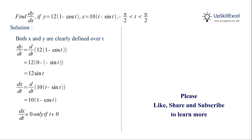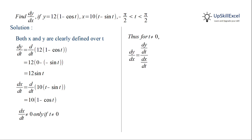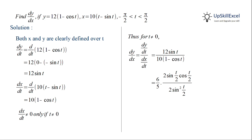So we can find dy by dx at all t except t equal to 0. Substituting the values of dy by dt and dx by dt, and then applying the sin 2-theta and cos 2-theta formulas to replace sin t by 2 sin(t/2) cos(t/2), and in the denominator 1 minus cos t can be replaced by 2 sin squared(t/2). We can then cancel one sin(t/2) from the numerator with sin(t/2) in the denominator to get 6 by 5 cos(t/2).